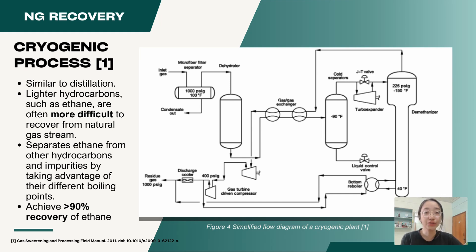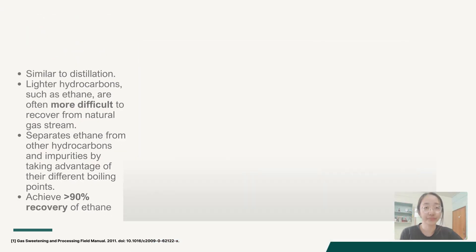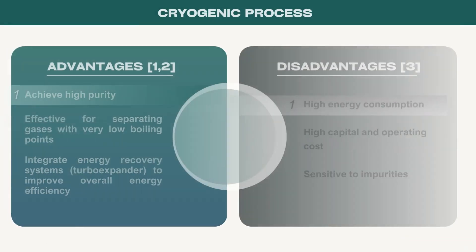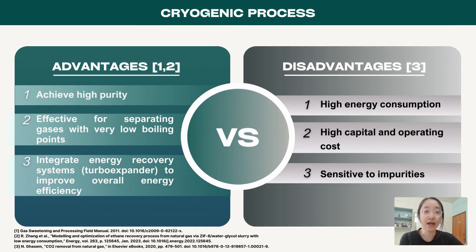As shown on the screen is the simplified flow diagram of the cryogenic plant. The advantages of cryogenic processing include achieving high purity of ethane, effectiveness for separating gases with very low boiling points, and an integrated energy recovery system such as a turbo expander to improve overall energy efficiency.